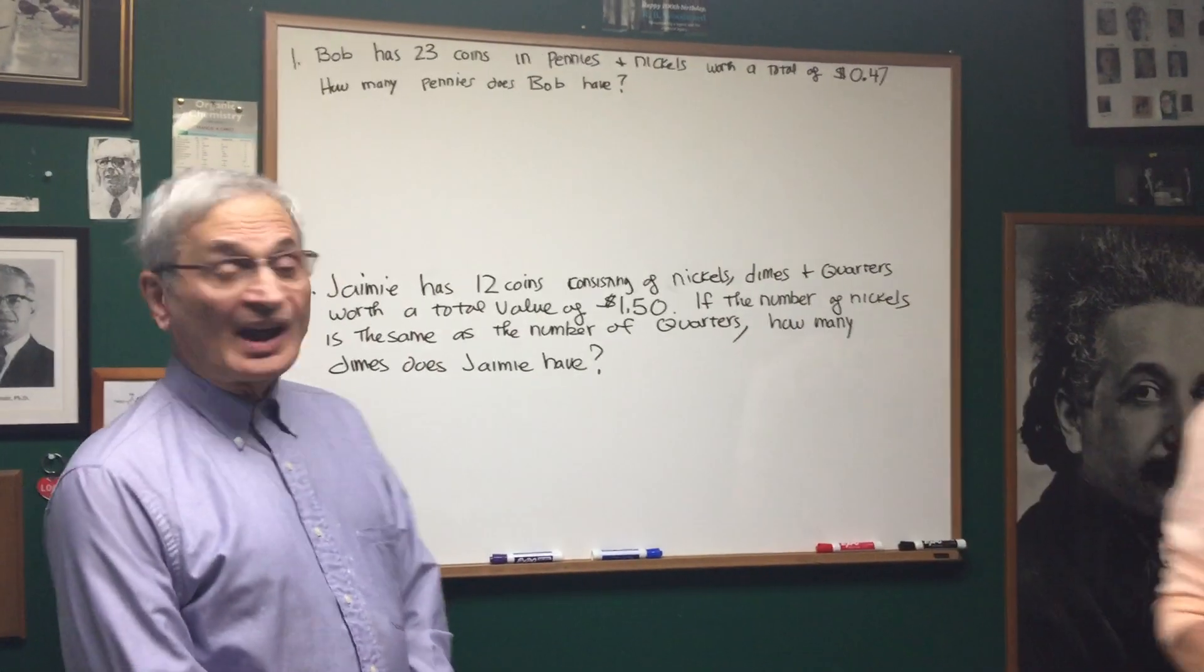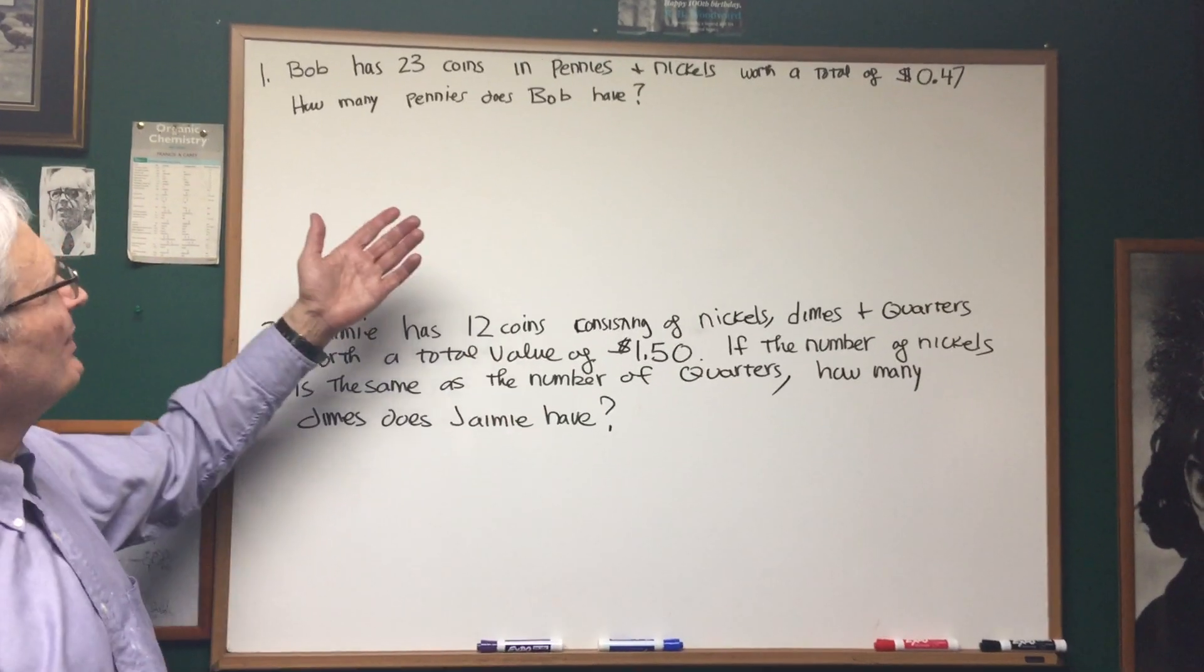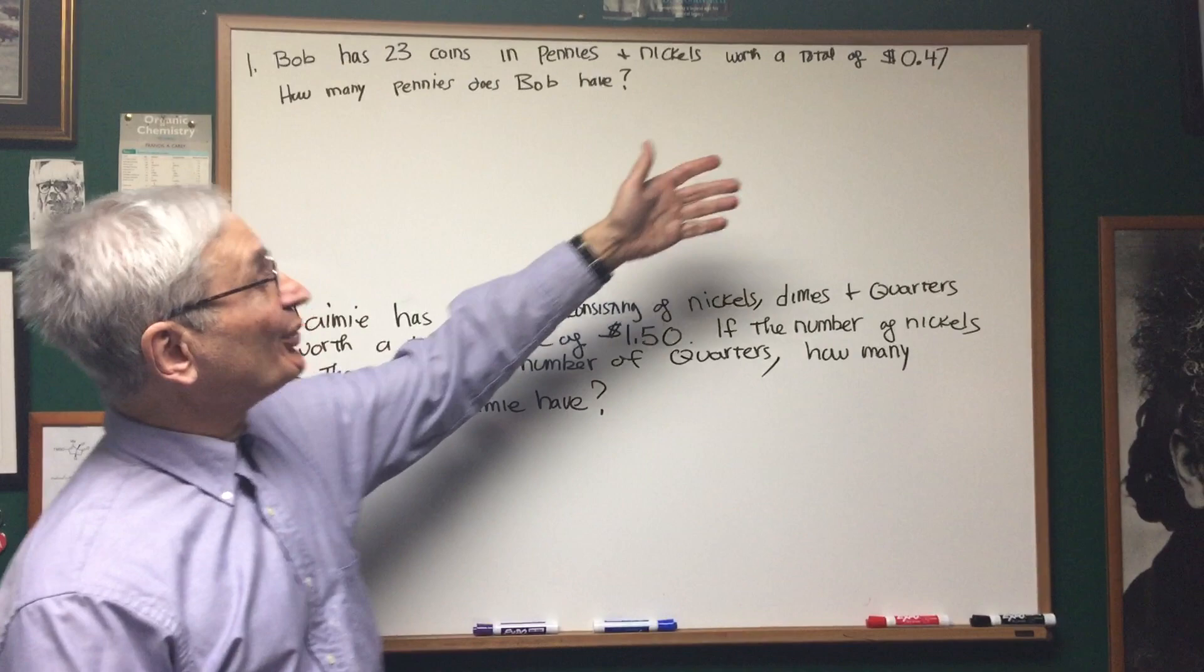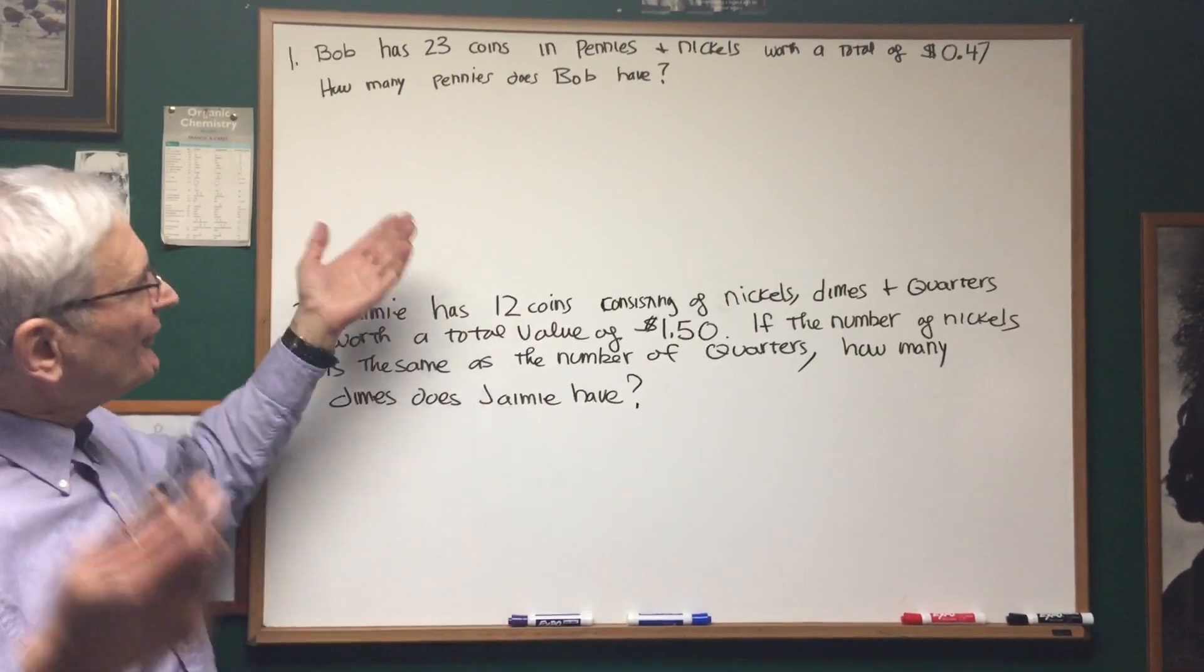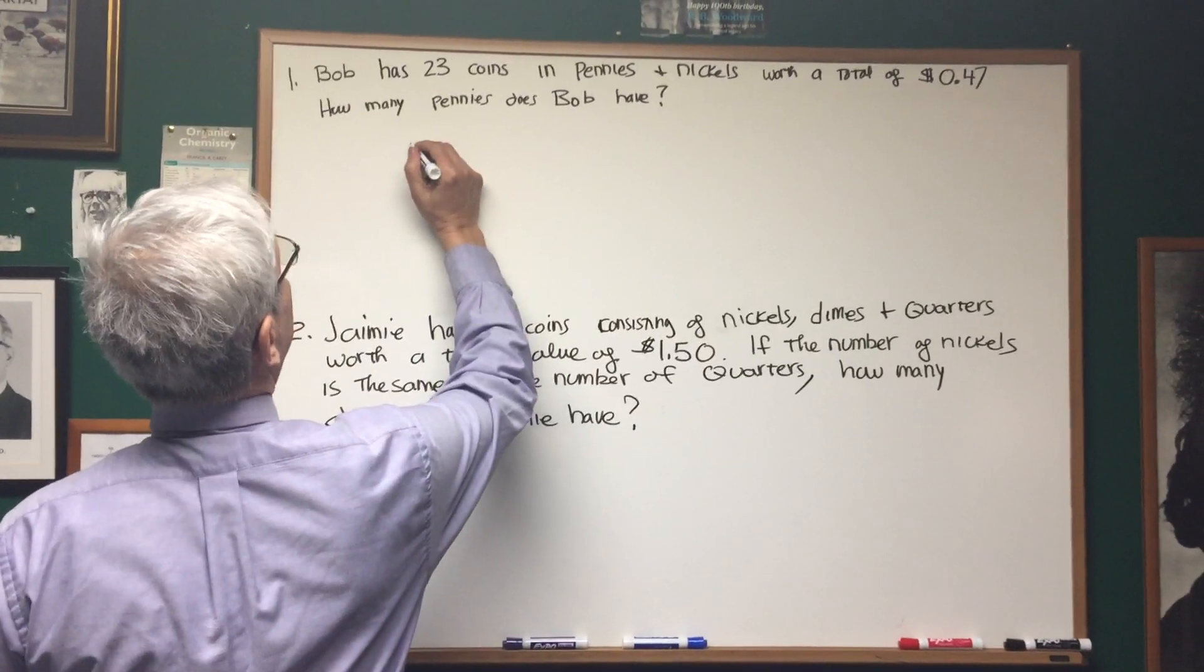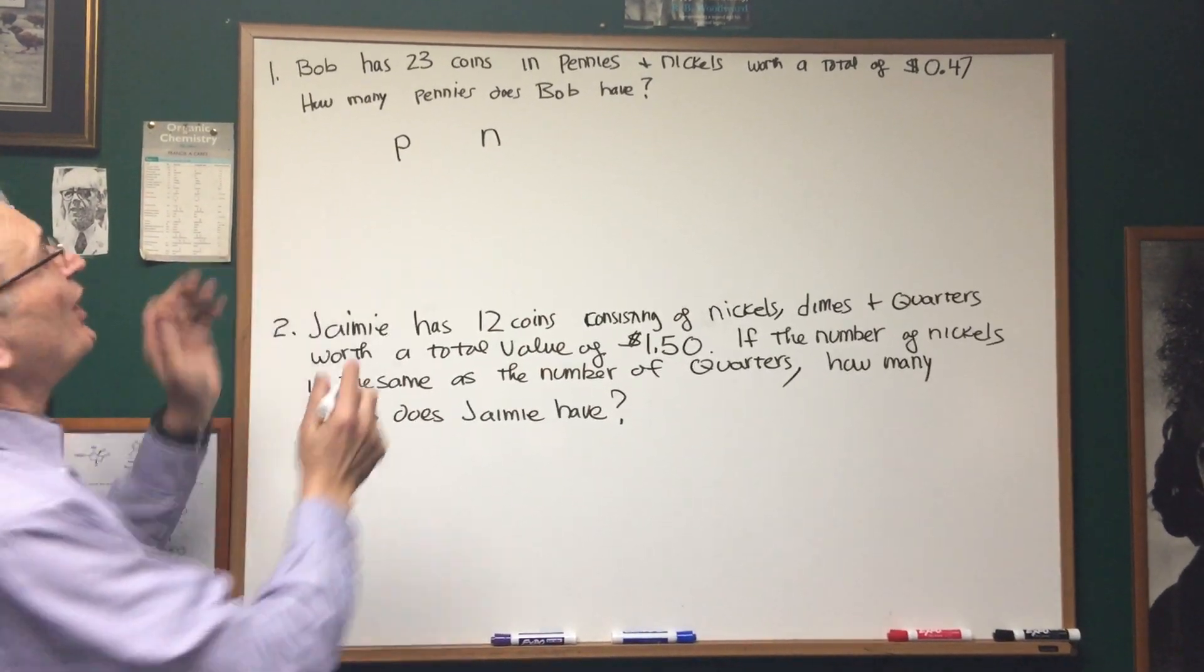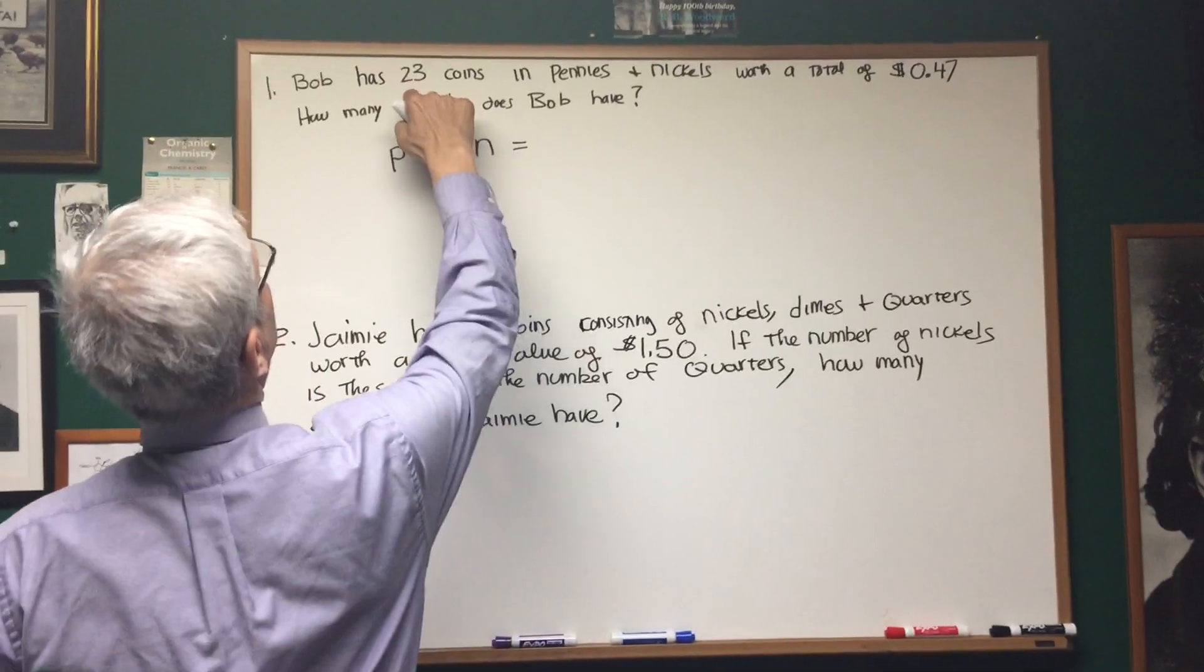Alright, Professor, it's all yours. Okay, Leslie, this is a standard problem you'll see on the DAT, coin problems. Let's just read it together. Bob has 23 coins in pennies and nickels, worth a total of 47 cents. How many pennies does Bob have? Well, first let's assign a variable to the number of pennies. Let's say P represents the number of pennies and N represents the number of nickels. If we make that assignment, we know what?